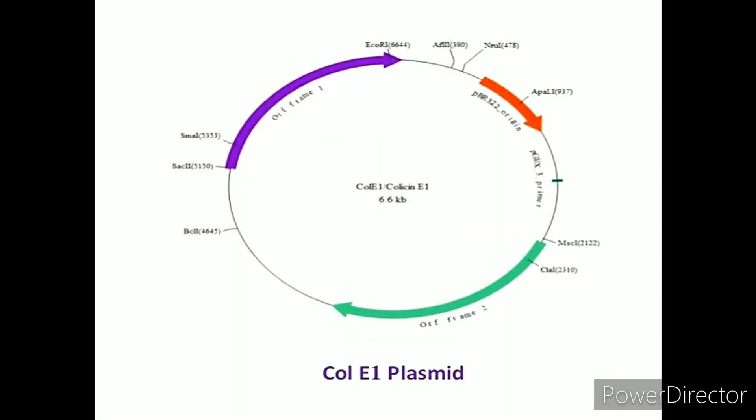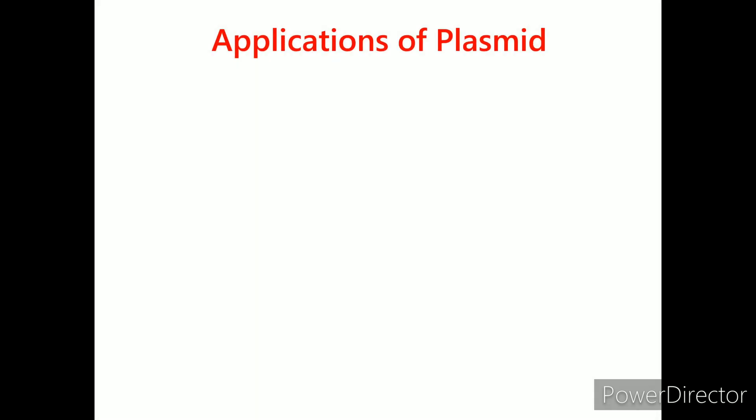Col plasmids. Col plasmids contain genes that make bacteriocins, also known as colicins, which are proteins that kill other bacteria and thus defend the host bacterium. Bacteriocins are formed in many types of bacteria, including E. coli, which gets them from the plasmid colicinV. Applications of plasmids.